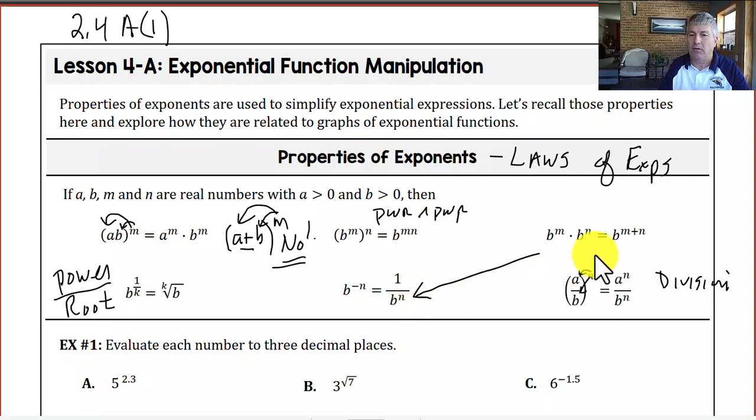And in fact, that law of exponents leads to b to the negative n. We end up with b to the negative n equals 1 over b to the n. So a negative exponent is a fraction and not a negative number. And then our final example, 1 over b to the k goes back to our power over root. So that's the kth root of b.